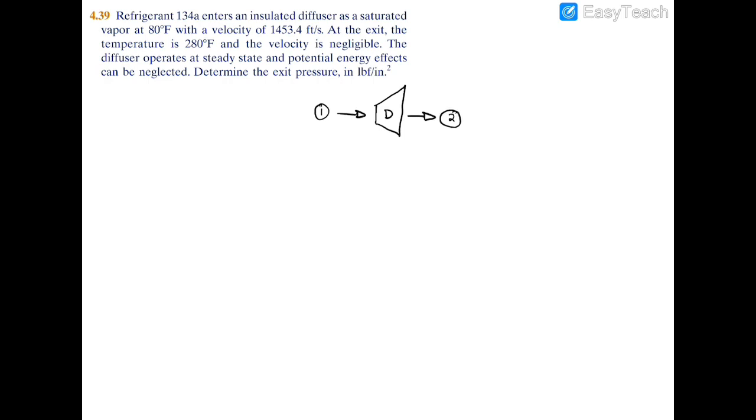At the inlet we have a saturated vapor, so a quality of 1, x1 equals 1. We have a temperature of 80 degrees Fahrenheit. We have a velocity at 1 equal to 1453.4 feet per second. At the exit we have a temperature T2 equals 280 degrees Fahrenheit. We have a velocity at 2 that's negligible, we can set that equal to 0 feet per second. We're looking for the pressure at the exit in psi, pound force per inch squared.